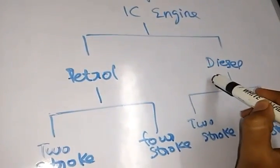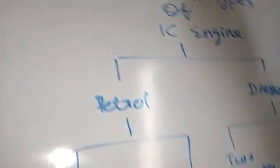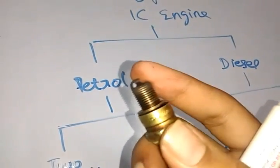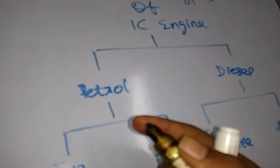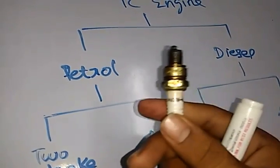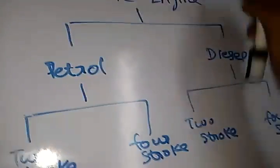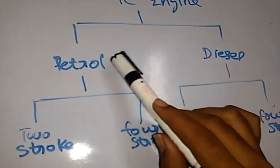The difference between the petrol engine and the diesel engine is based on the components present. In the petrol engine, there is a component known as the spark plug, which produces a spark across a gap, creating the combustion process that ignites the air-fuel mixture inside the cylinder. In the diesel engine, there is no spark plug, but instead a component known as a fuel injector, which injects atomized diesel particles into the cylinder.